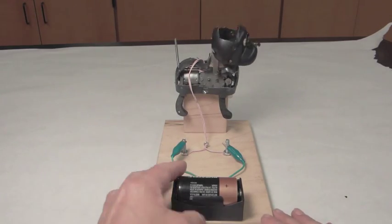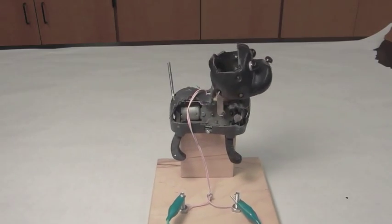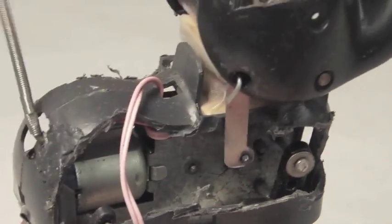Here's another toy that we put on display. In this case, it's a little barking dog. When we hook up the batteries one way, it barks and wags its tail.